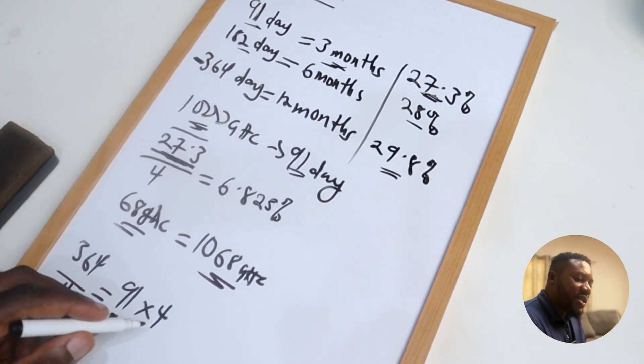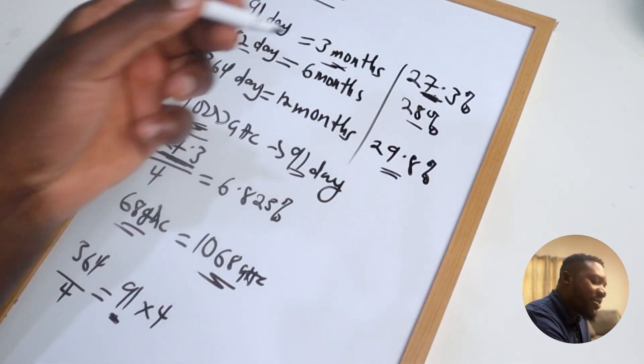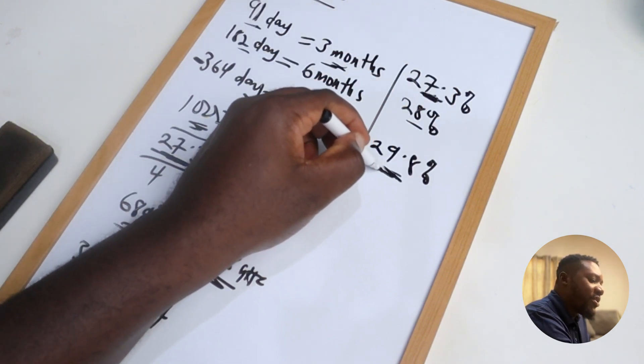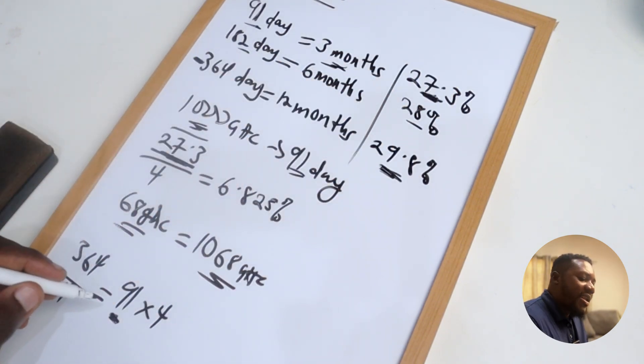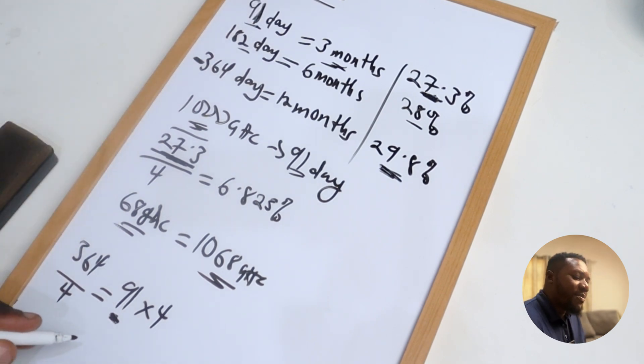But the reason why this rate is lower than this rate is because at the end of every 91 days, your money is going to come back into your account. So you're going to have that liquidity and you'll be able to withdraw your money.